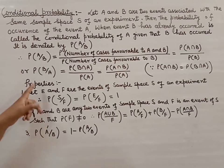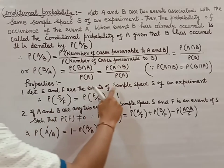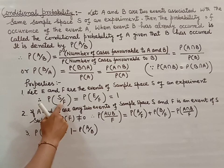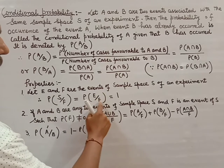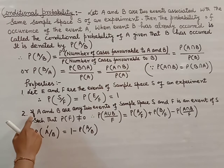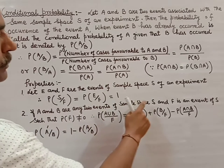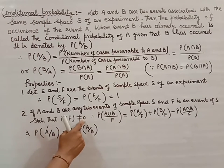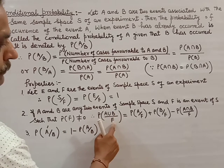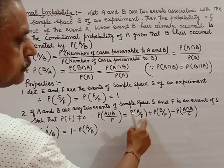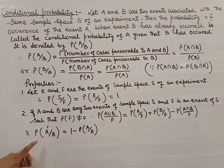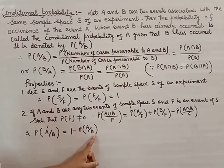Now, the properties of conditional probability: Let E and F be events of a sample space of an experiment. Therefore, P(S|F) equals P(E|F) equals 1. If A and B are any events of sample space S, and F is an event such that P(F) is not equal to zero, then P(A union B | F) equals P(A|F) plus P(B|F) minus P(A intersection B | F).